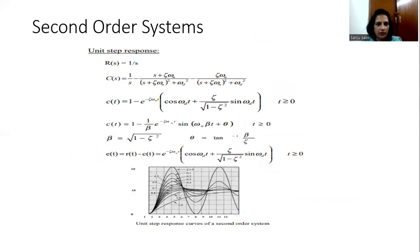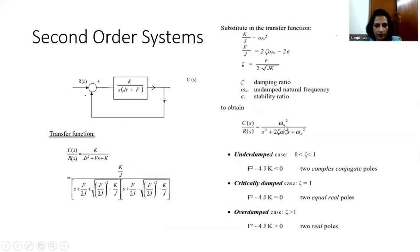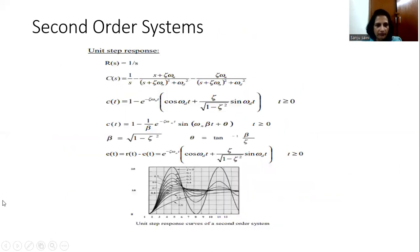We will consider a second order system and its unit step response. The response is basically the output — unit step response shows how the output is changing when the input is a unit step. When input is unit step, R(s) in the s-domain can be represented as 1 divided by s. So C(s) will become equal to 1/s multiplied by ωn² divided by s² plus 2ζωn·s plus ωn².